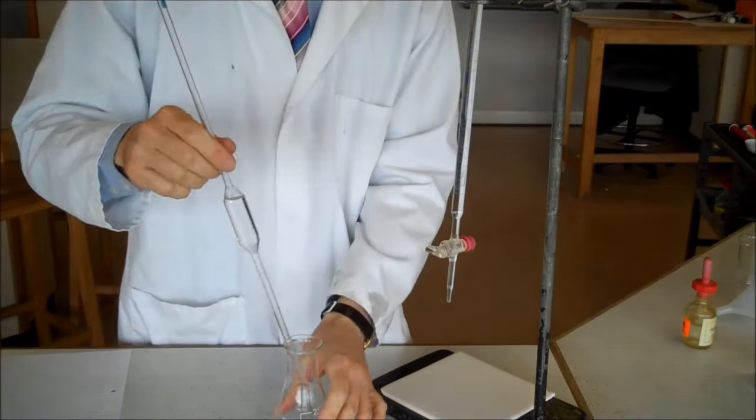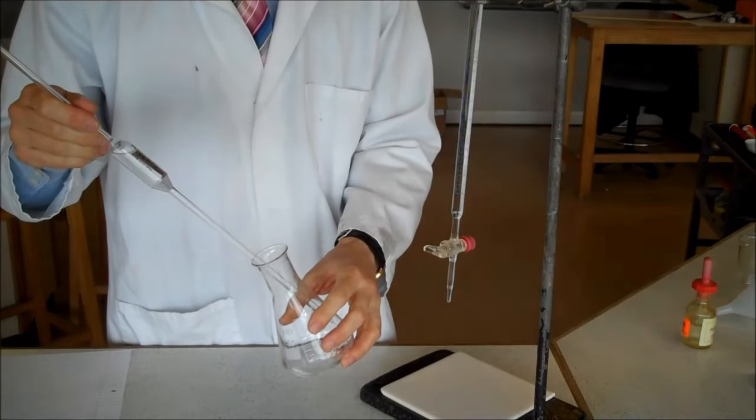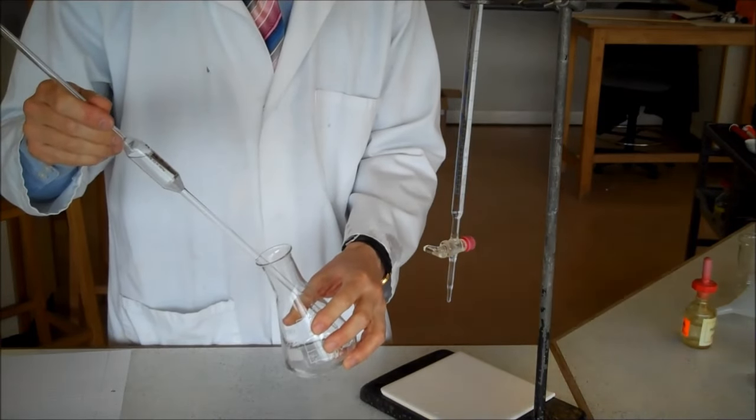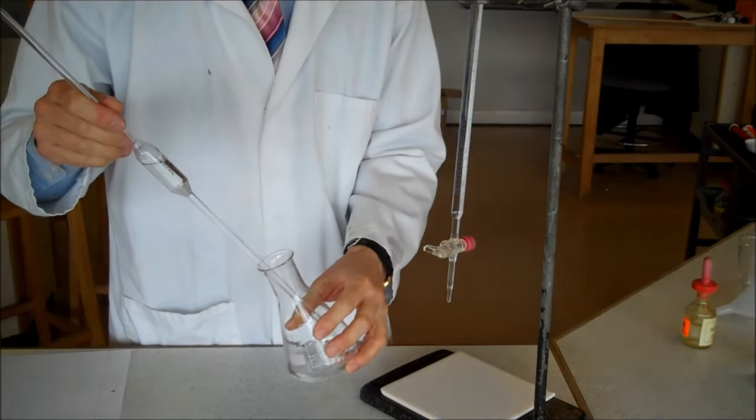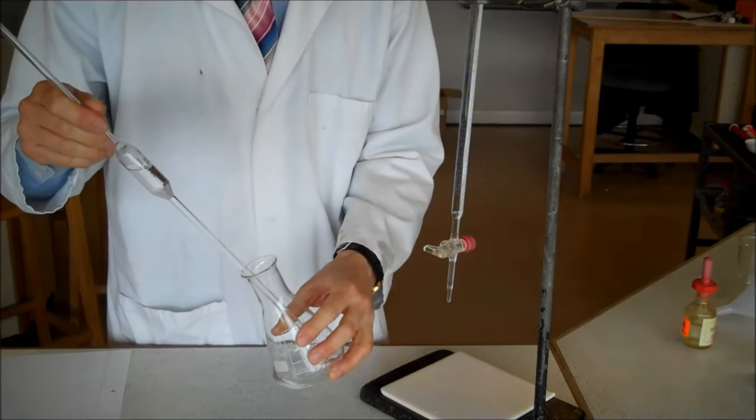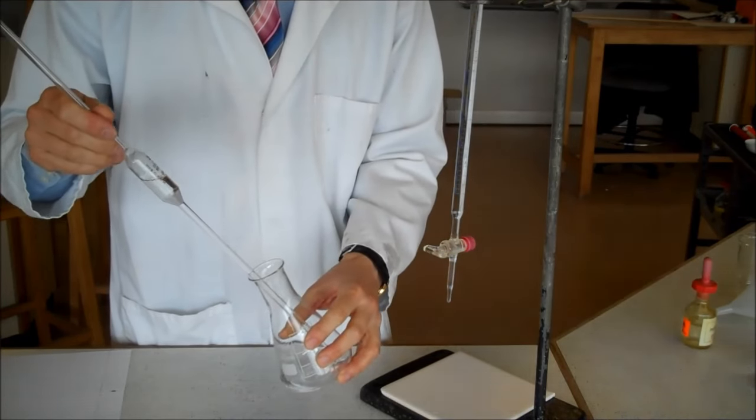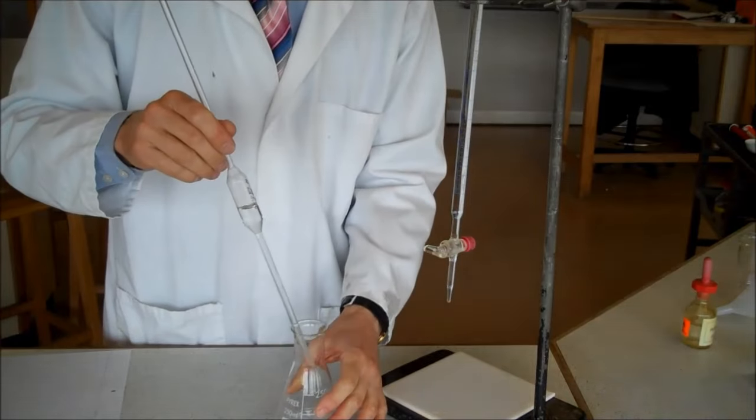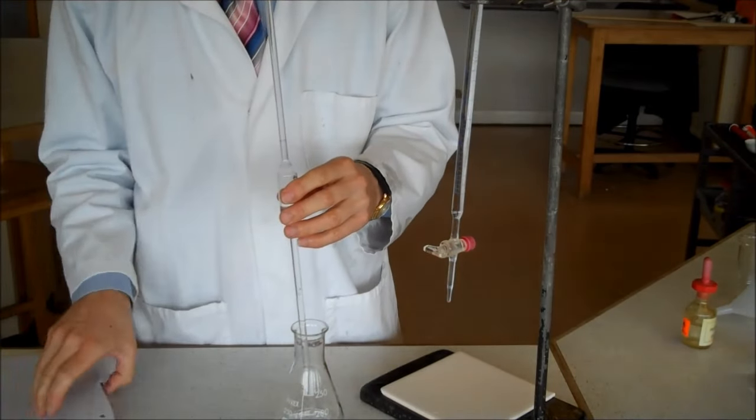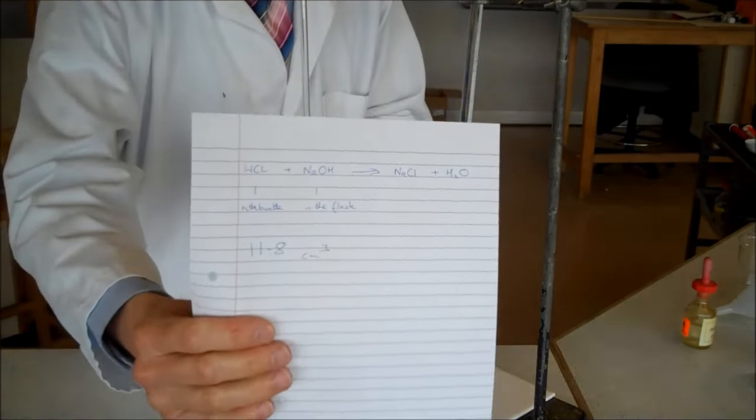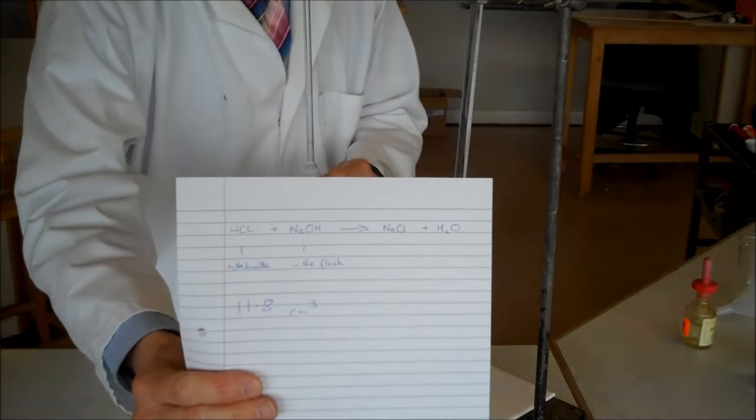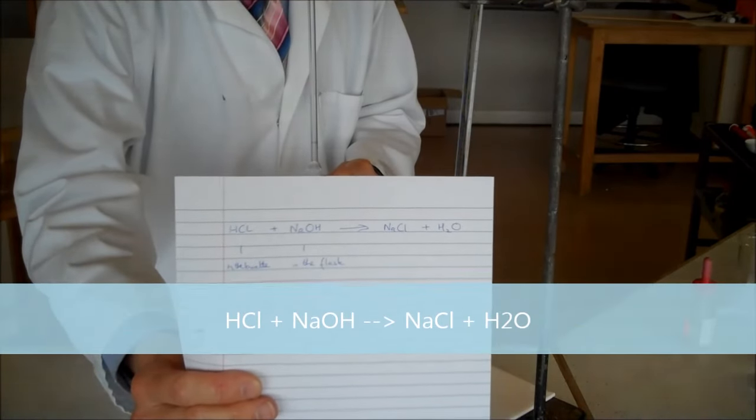So this time, my burette has a different purpose. I'm simply going to add 11.8 centimeters cubed, exactly. And once I've done that, we'll be left with a pure solution of sodium chloride in water. There's my balanced equation again. HCl plus NaOH gives NaCl plus H2O.